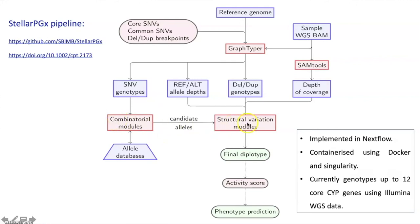We also use the depth of coverage to determine the structural variation in a sample. I'm happy to go into detail on this — you can contact me anytime during the conference or even afterwards if you're interested. One other important thing to mention about StellarPGX is that it is containerized using Docker and Singularity and implemented in Nextflow, which makes it highly reproducible and easy to install.